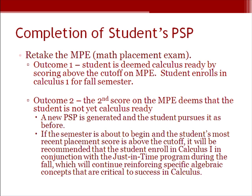The second outcome is that the second score on the math placement exam deems that the student is not yet calculus ready. For this instance, a new personalized study plan is generated, and the student can pursue it as before. If the semester is about to begin and the student's most recent placement score is above the cutoff, it will be recommended that the student enroll in Calculus I for the fall semester, but in conjunction with our Just in Time program, which continues to reinforce specific algebraic concepts critical to success in Calculus I.